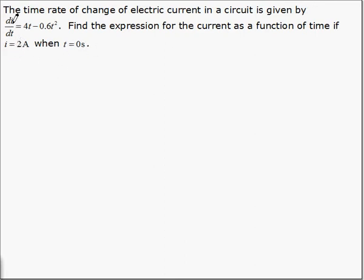Since we know the derivative of i with respect to t, we can integrate to find i. It has to be the integral of 4t minus 0.6t squared dt.